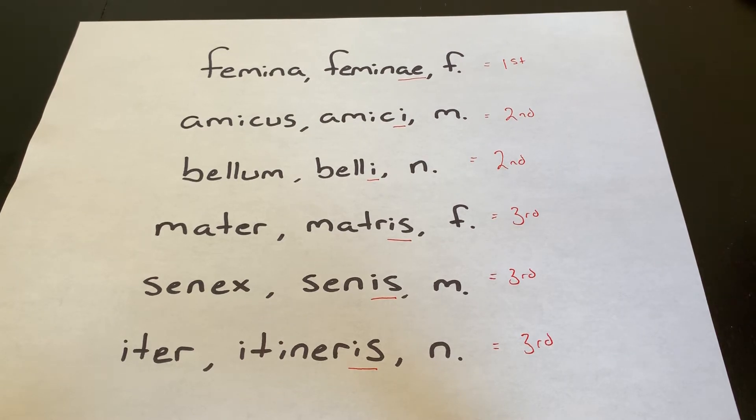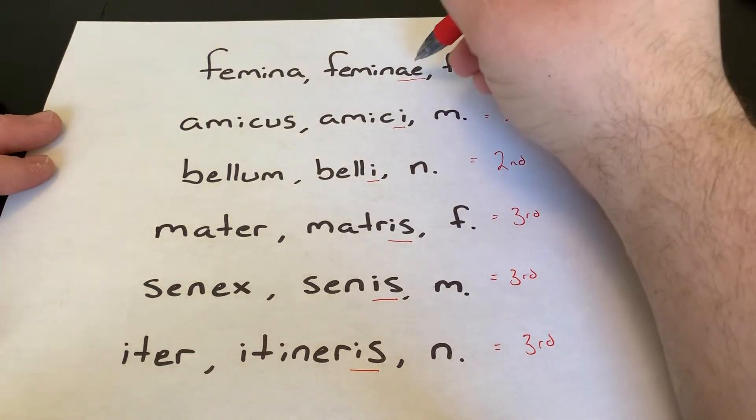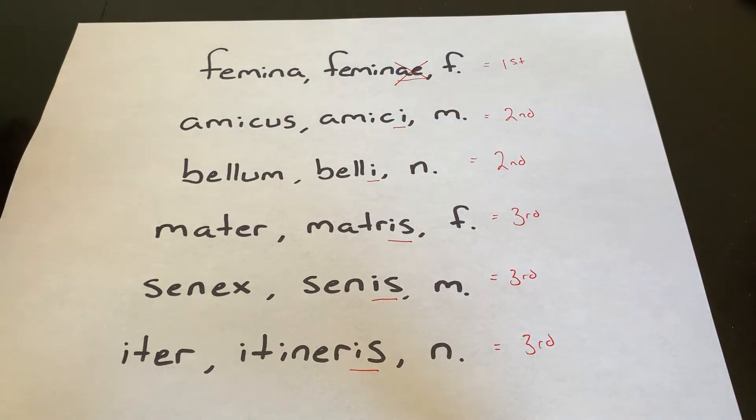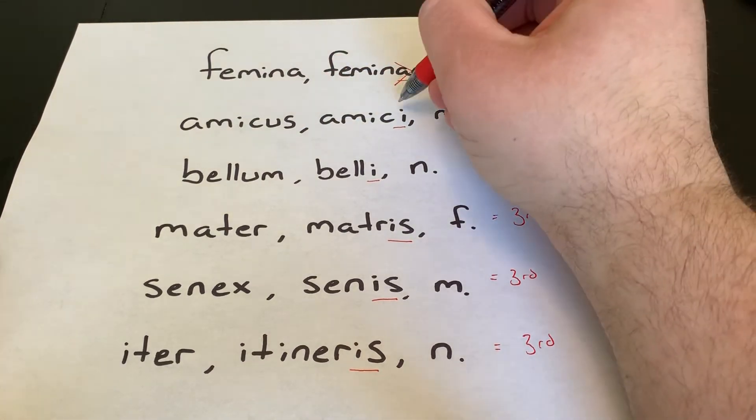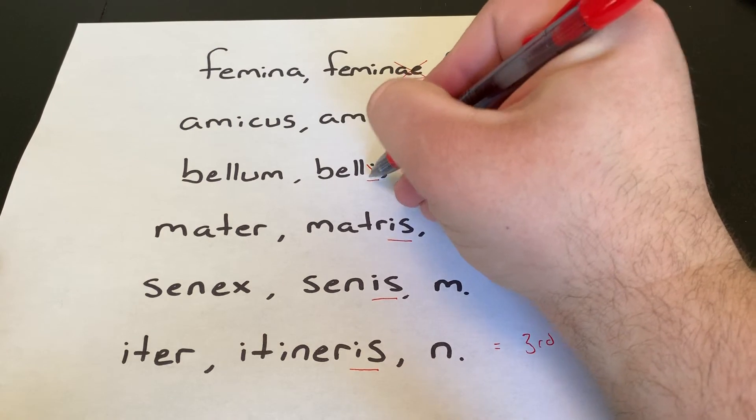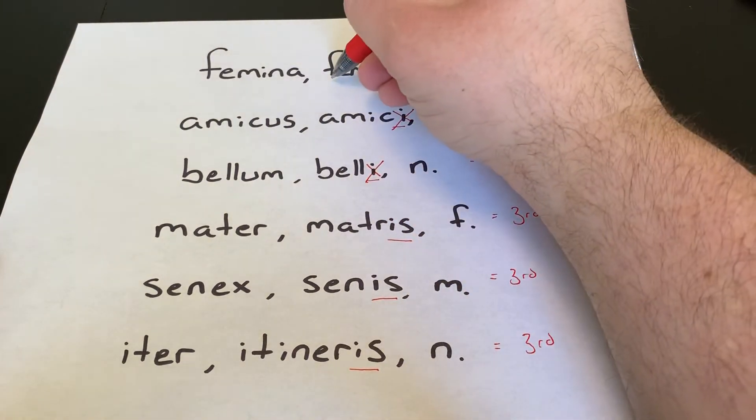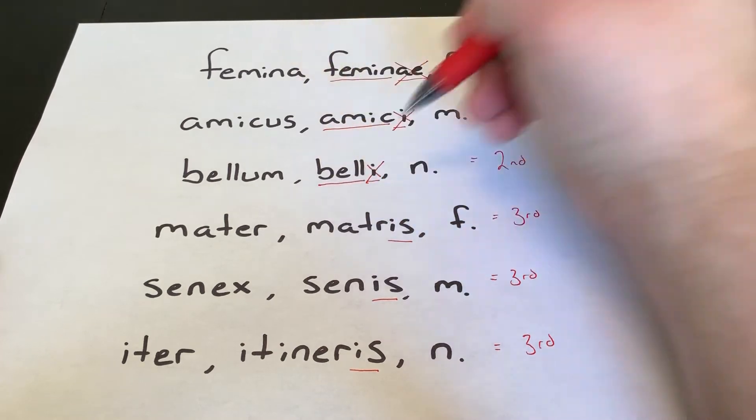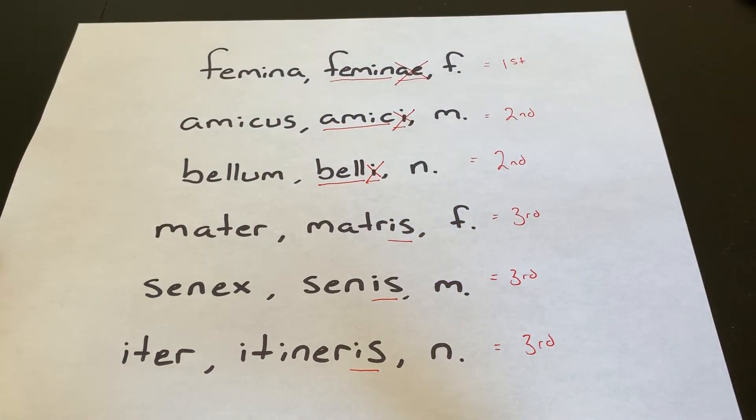Which means that femina feminae, take off the AE and your stem is femin. Your stem for amicus amici, take off that genitive ending and there's your stem. So the genitive form without the genitive ending is the stem of a noun.